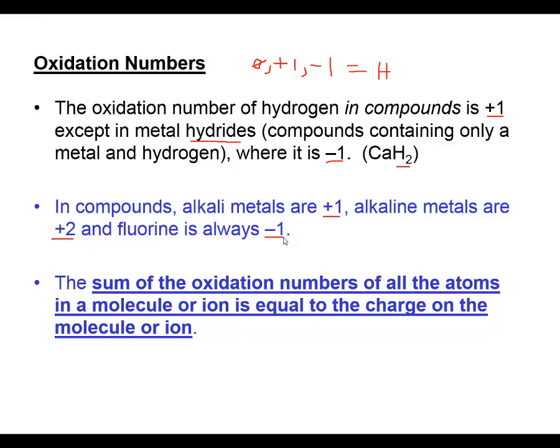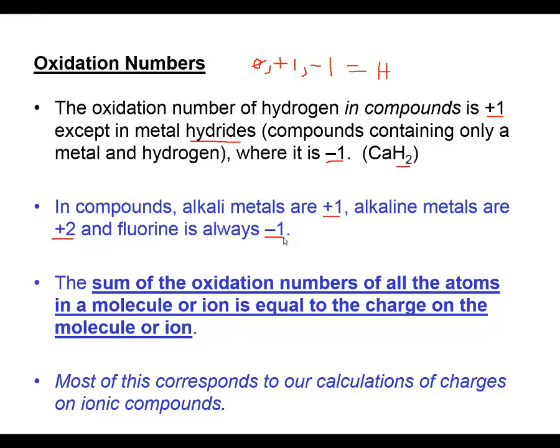If I add up the oxidation numbers on every one of the atoms present in a chemical compound or polyatomic ion, all of those oxidation numbers should add up to whatever charge we have present. If it's a neutral molecule, they should add up to zero. If it's a polyatomic ion, they should add up to the charge on the polyatomic ion.